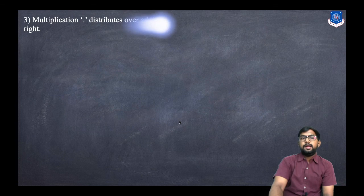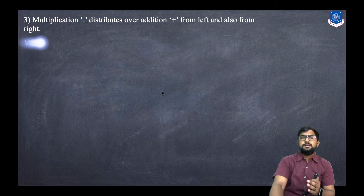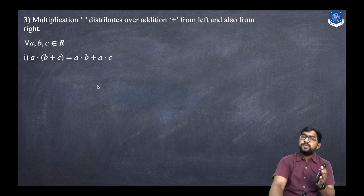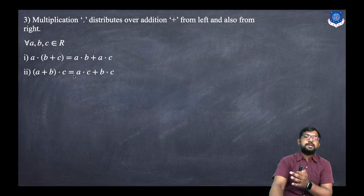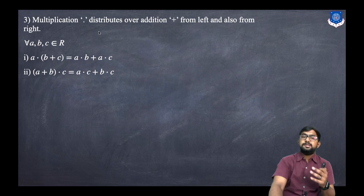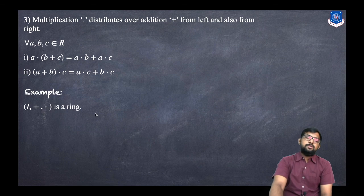The third axiom is that multiplication distributes over addition from both left and right. For every A, B, C belonging to R: A·(B + C) = A·B + A·C, and (A + B)·C = A·C + B·C. So the dot operation distributes over addition from the left as well as from the right.